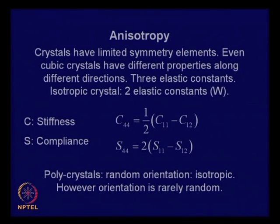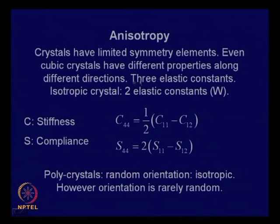If we look at the origin of anisotropy, in general, crystals have some symmetry elements. Cubic crystals have the maximum number of symmetry elements, yet even cubic crystals have different properties along different directions. When we look at mechanical properties, these are determined by elastic constants. Looking at bulk cases, for a cubic crystal you need three elastic constants, whereas for an isotropic material it is sufficient to have two.